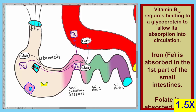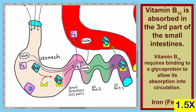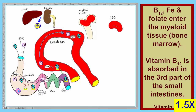The situation with vitamin B12 requires a little more explanation. Vitamin B12 requires a glycoprotein to allow its absorption into circulation. The vitamin B12 must bind with this protein, and this vitamin B12-protein complex travels to the third part of the small intestines. Now we have all three required components — iron, folate, and vitamin B12 — in circulation, and they travel through circulation into the bone marrow.